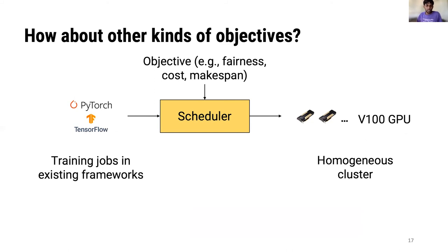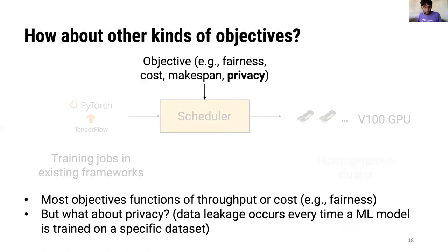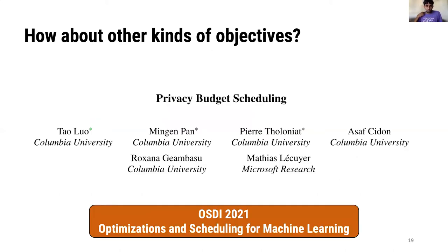Schedulers can allocate resources to different jobs according to other objectives as well. For example, most objectives are functions of either the throughput or the cost of training, such as fairness. But another important concern when training machine learning models is privacy, since data leakage occurs every time a machine learning model is trained on a specific training dataset. Privacy Budget Scheduling, which is to appear at OSDI this year, tries to explicitly take into account the amount of data leakage that occurs when various machine learning models reuse the same training dataset, and tries to allocate resources to various jobs while keeping into account this fixed privacy budget across jobs.